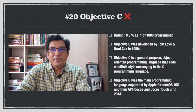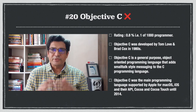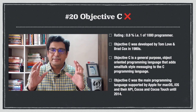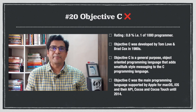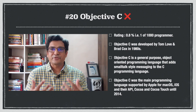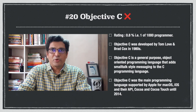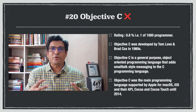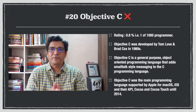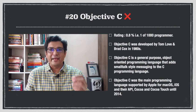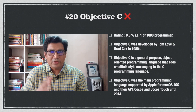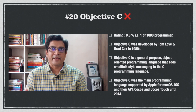Let us start with the least popular programming language. At number 20 is Objective-C, developed by Tom Love and Brad Cox in the 1980s. It is a general purpose object-oriented programming language that adds Smalltalk-like messaging to the C programming language. Objective-C was the main programming language supported by Apple for macOS, iOS, and their APIs Cocoa and Cocoa Touch until 2014, when it was replaced by Swift.